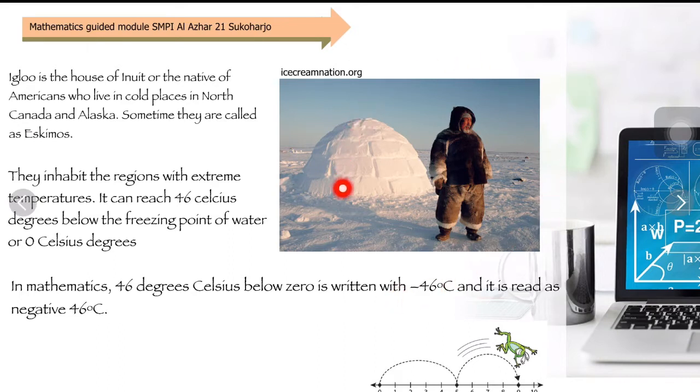The second picture, do you know that? An igloo is the house of Inuit or the natives of Americans living in cold places in North Canada and Alaska. The inhabited region with extreme temperatures.